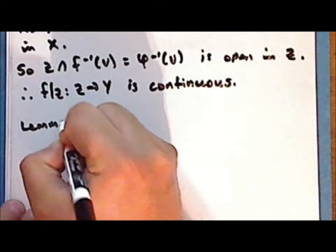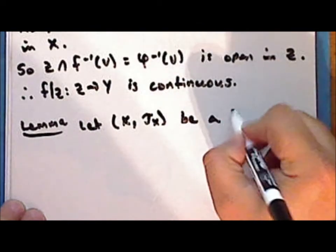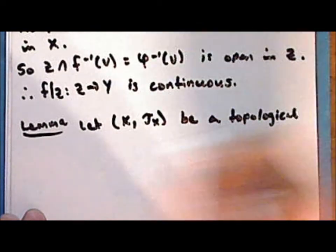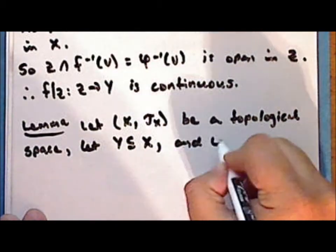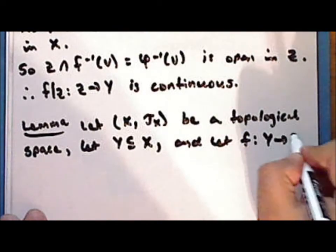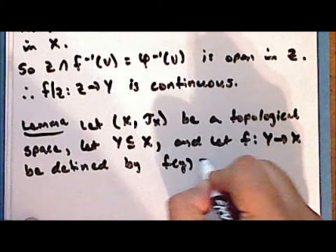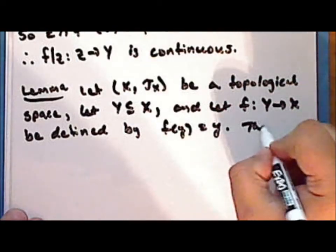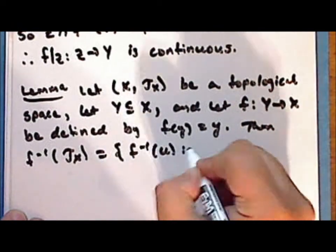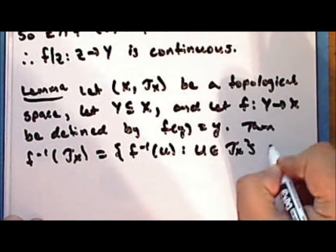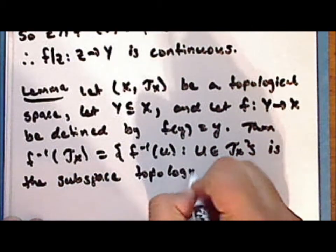So next we'll prove a lemma. Let x with topology tau sub x be a topological space, let y be a subset of the space x, and let the function f from the subset y into the space x be defined by f of y equals y. Then f inverse of the topology on x — which is the set of all inverse images of the sets u where u is in the topology on x — is the subspace topology on y.